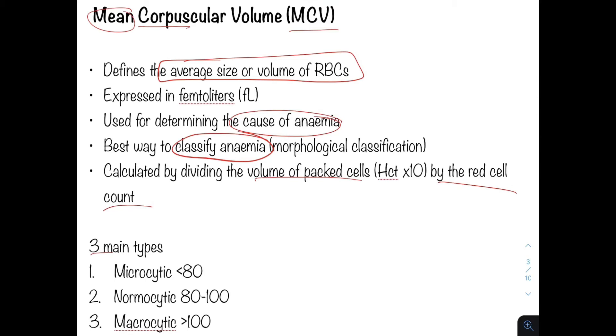So these are microcytic, normocytic, and macrocytic. I've included the reference ranges here because this is probably one of the most important reference ranges you need to know in terms of red cell indices.